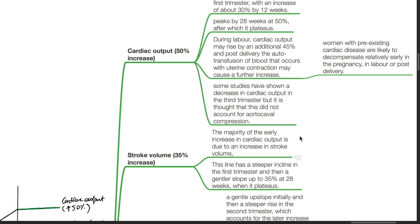Stroke volume experiences a 35% increase. The majority of early increase in cardiac output is due to an increase in stroke volume. This line has a steeper incline in the first trimester and then a gentler slope up to 35% at 28 weeks when it plateaus.